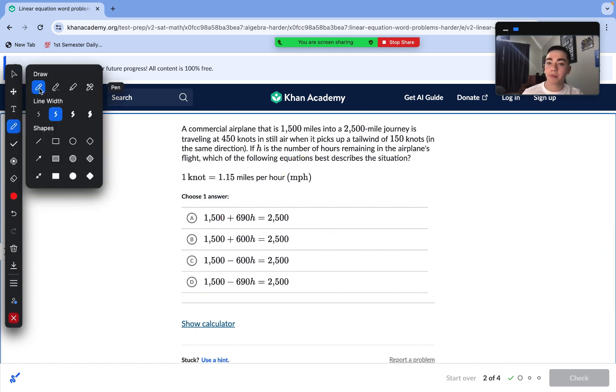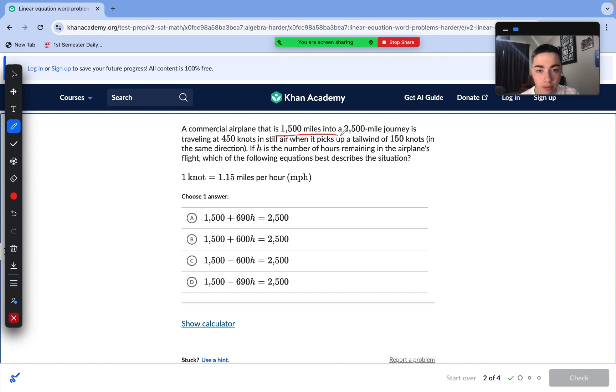Again, a commercial airplane that is 1,500 miles into a 2,500-mile journey is traveling at a rate of 450 knots in still air when it picks up a tailwind of 150 knots. If h is the number of hours remaining in the airplane's flight, which of the following equations best describes the scenario or situation?